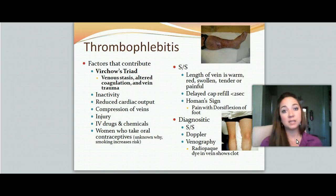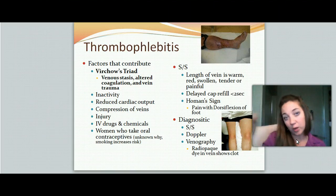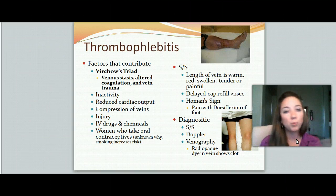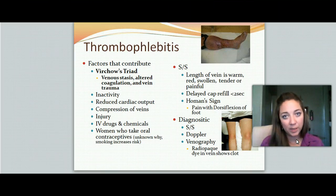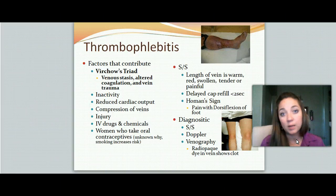Diagnostic tests: we look at signs and symptoms a lot of times and can get a good picture, but a Doppler ultrasound is a definitive test. It's a little handheld Doppler — you rub it along and can find where the clot is. Venography is a more expensive and less frequently used test where they inject a radio-opaque dye into the patient's veins. The dye flows through until it reaches the clot and stops, and under the image we can see where the clot is.